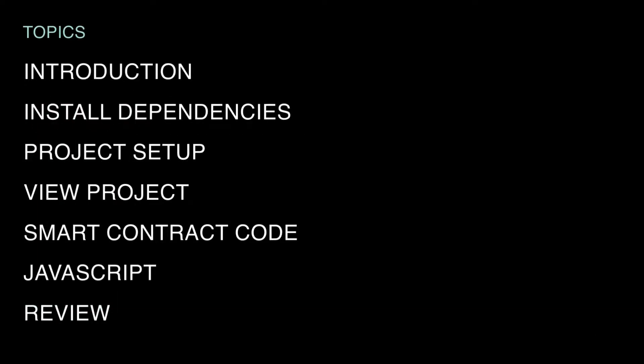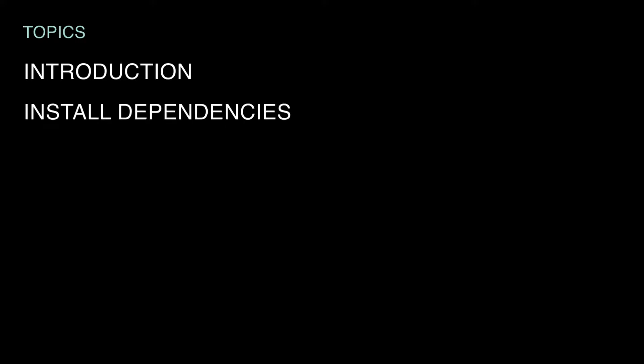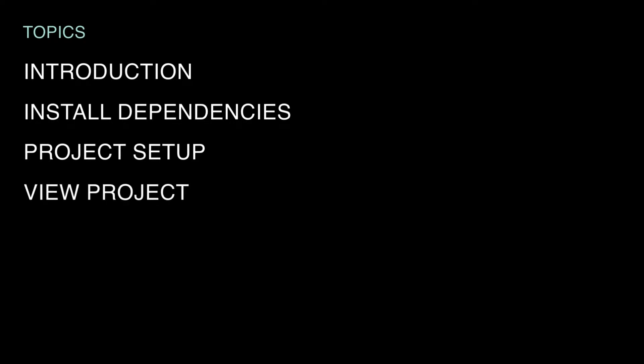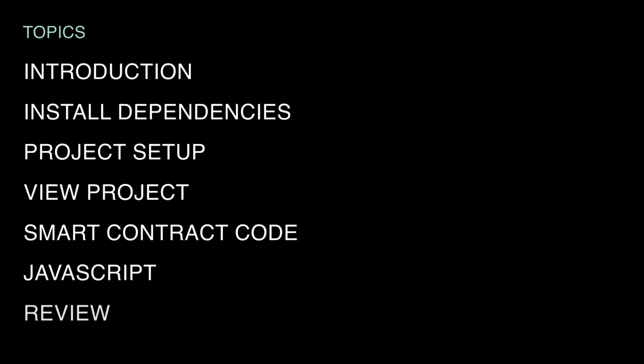Here's a quick look at what we'll cover. First, I'll introduce the application you'll build. From there, you'll install each of the dependencies required for the project. Then you'll move on to set up the project. Afterwards, we'll view the project files and go over how the application works. From there, we'll take a closer look at how PACT and JavaScript code is working. And finally, we'll take a moment to review everything. After this tutorial, you'll be in a great place to start building your own blockchain applications using PACT.